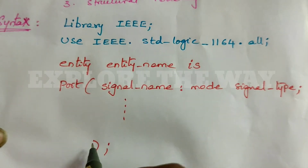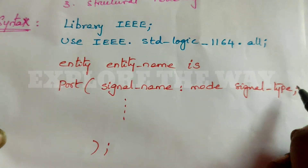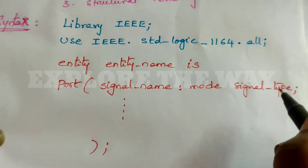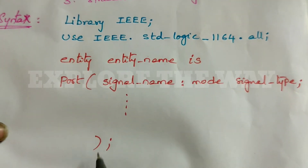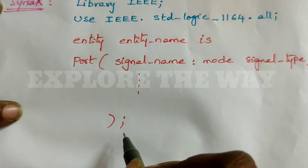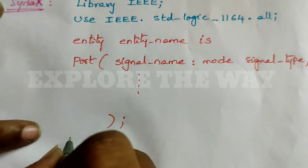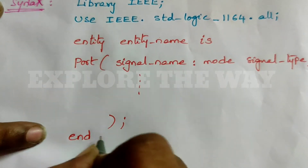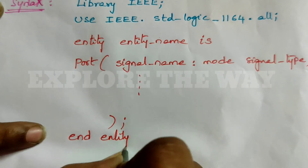Every signal declaration should end with a semicolon. But for the last one, after closing the bracket, you should put the semicolon. Then end the entity by writing 'end entity name'.